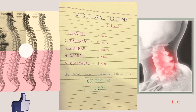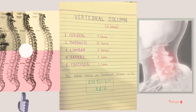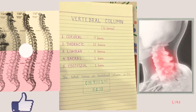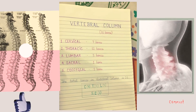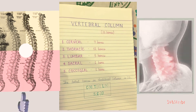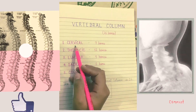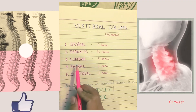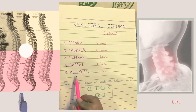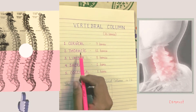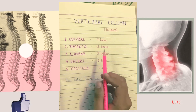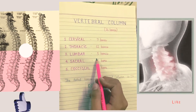Today we will start the topic vertebral column. The vertebral column means the backbone of the skeleton. In the vertebral column, 26 bones are present. It is divided into five types: first cervical, second thoracic, third lumbar, fourth sacral, and last coccygeal. In cervical, seven bones are present; in thoracic, twelve bones are present; in lumbar, five bones are present.